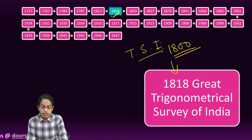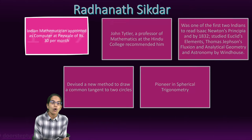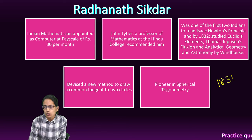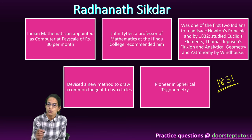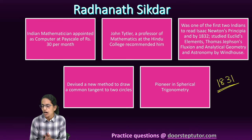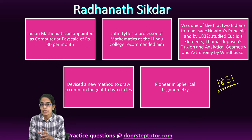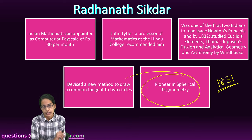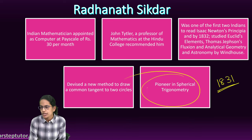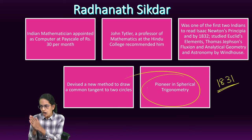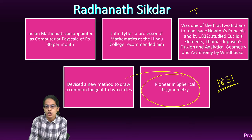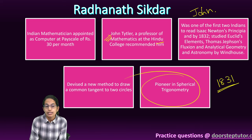This was not all. In 1831, George Everest, who was the Surveyor General of India, was looking for a mathematician who was a pioneer in spherical trigonometry. He approached one such person — John Tritler, a professor of mathematics at Hindu College.